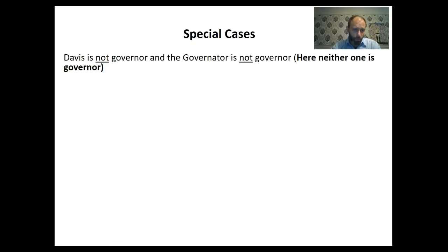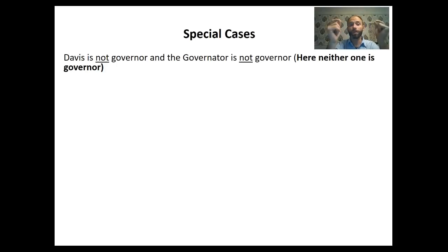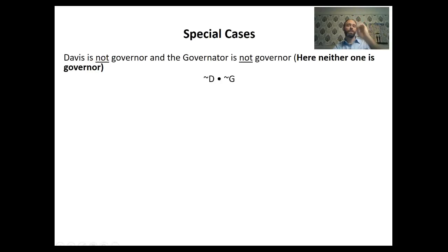Now some special cases dealing with negation. 'Davis is not governor and the governator is not governor.' Here neither one is governor — two statements both negated, joined by AND: tilde V dot tilde G.